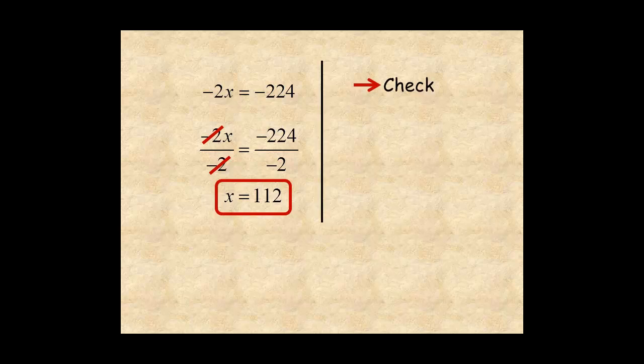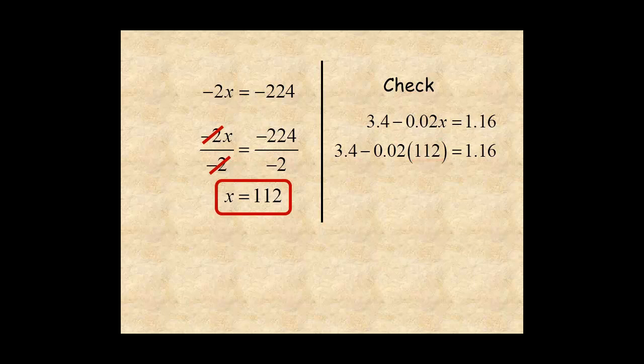Always check the solution. Rewrite the original equation and substitute the solution. Then 2 times 112 is 224. And 3.40 minus 2.24 is 1.16. And the solution checks.